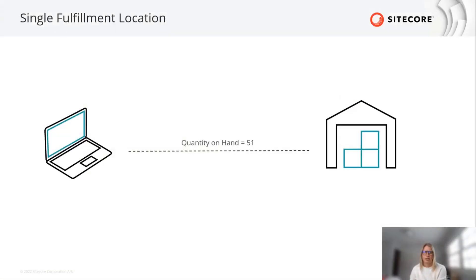I'll be walking through various inventory scenarios, but let's start with one in its most simplest form: a single fulfillment location. A fulfillment location represents anywhere a product is shipped from — this could be from an actual warehouse, fulfillment center, or a retailer. So here we have a laptop and its quantity on hand at its sole fulfillment location. Pretty simple.